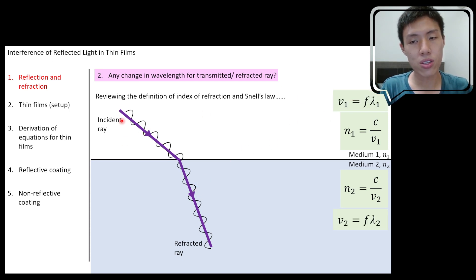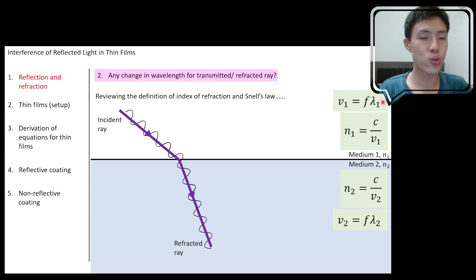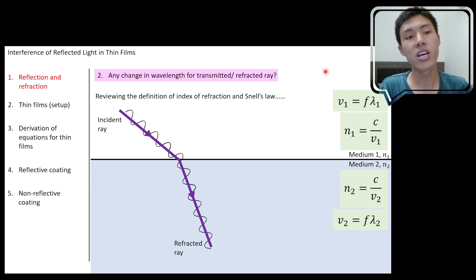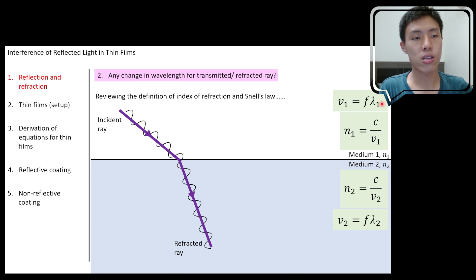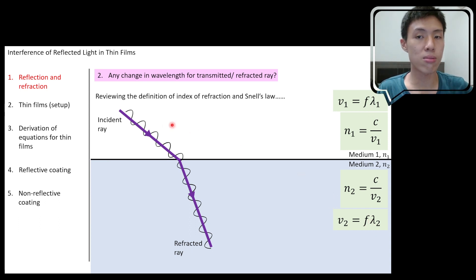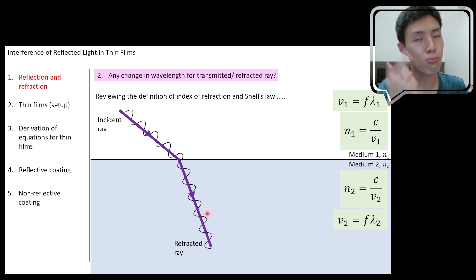In medium one, light travels according to the wave propagation equation v = fλ. Here v is labeled as v1 and v2 because the speed of light in different media are not the same — it can be faster or slower depending on the index of refraction. So v1 represents the speed of light in medium one, v2 in medium two, and λ1 and λ2 are the corresponding wavelengths. You might wonder why frequency is not labeled f1 and f2 — why we don't differentiate between frequencies in the two media.